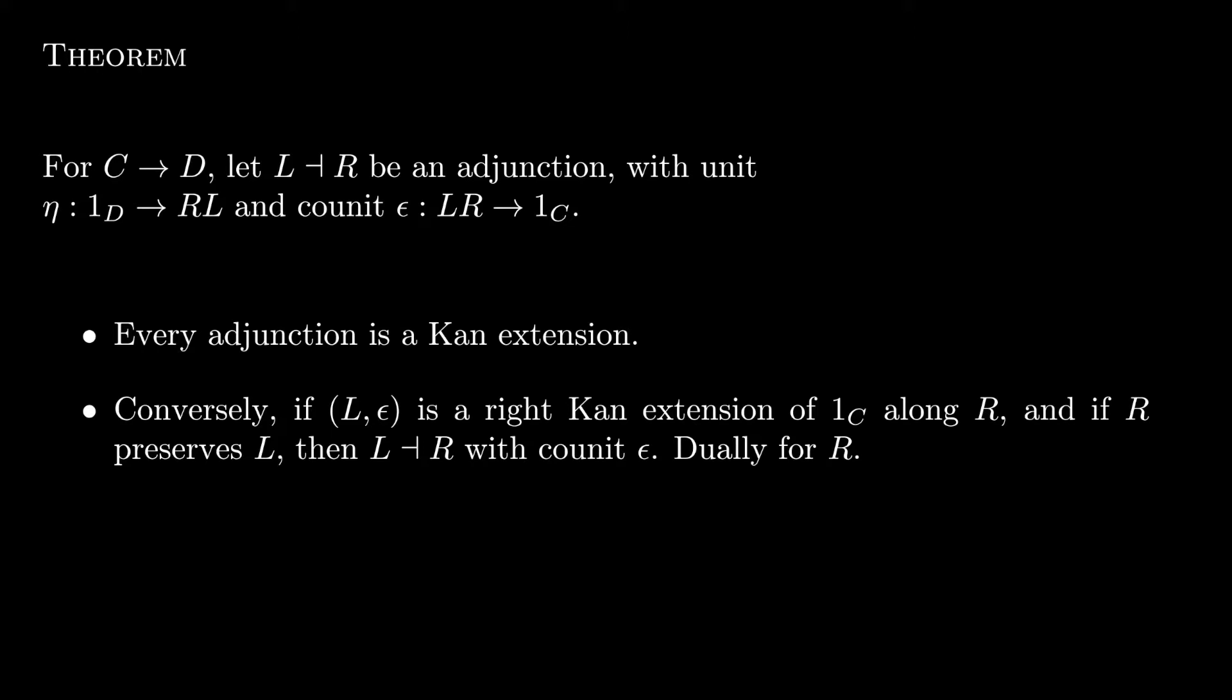Assume L and R are not a priori determined to be adjoint functors. If L is a right Kan extension of the identity on C along R, and if R preserves it, then L and R form an adjunction.